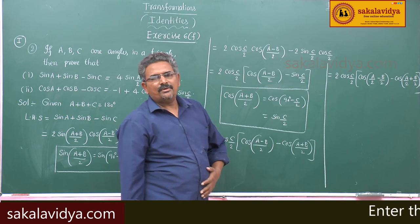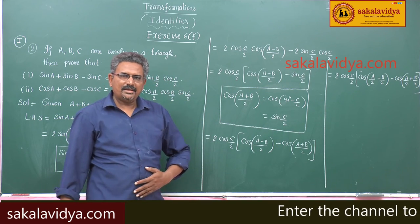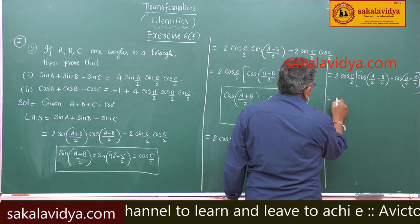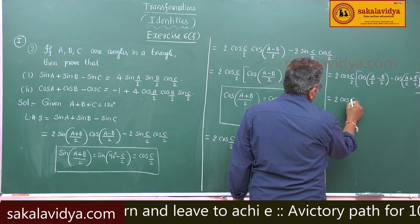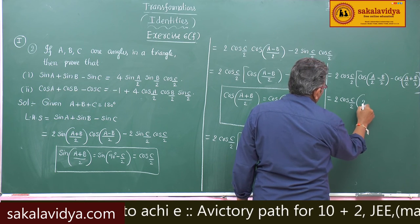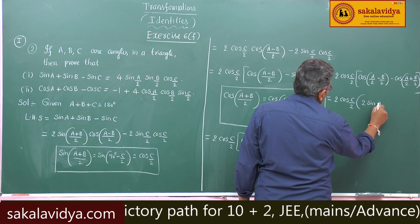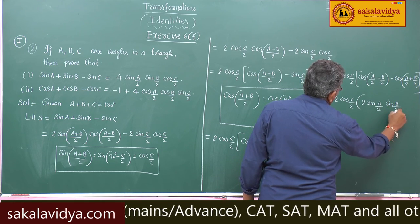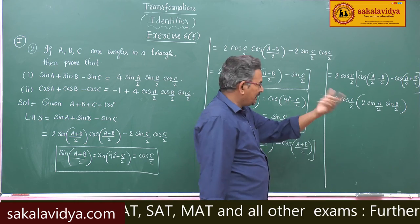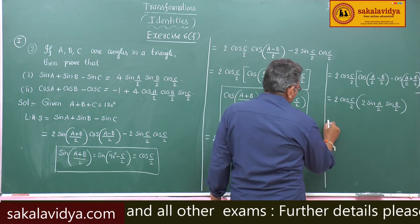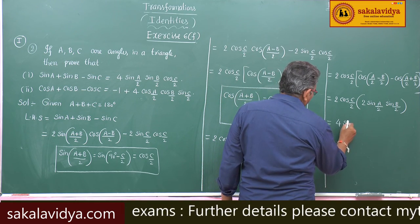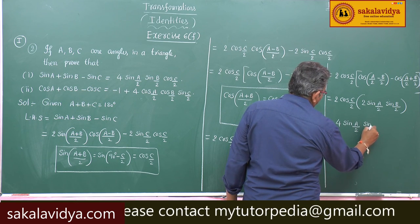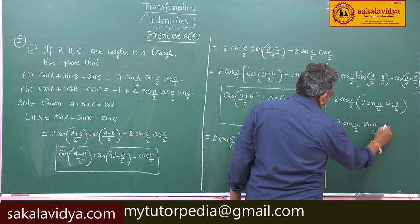The expression cos(A/2 - B/2) minus cos(A/2 + B/2) is in the form cos(A-B) minus cos(A+B), which equals 2 sin(A/2) sin(B/2). So we get 2 cos(C/2) into 2 sin(A/2) sin(B/2), giving 4 sin(A/2) sin(B/2) cos(C/2), which equals the right hand side.